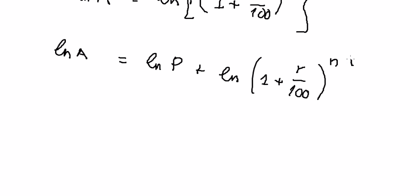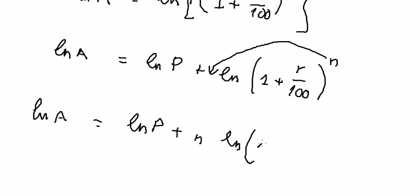Now because we have the power inside the log, n will come down. So we get Ln A equals Ln P plus n multiplied with Ln of 1 plus r over 100.